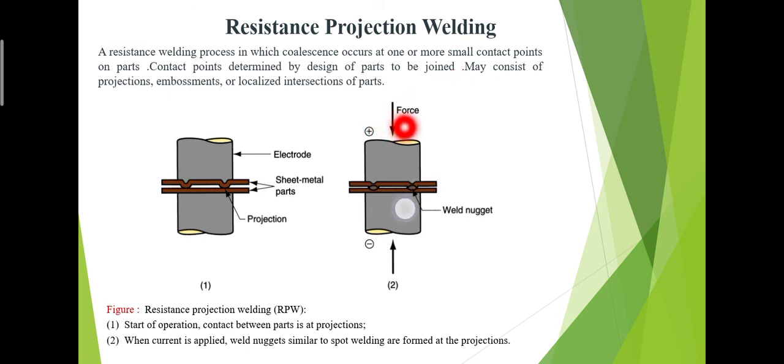We can say that low carbon steel can be welded easily and satisfactorily. Coated metals such as galvanized steel and tin plates can be welded, though considerable electrode maintenance is usually needed because coating sticks to the face of the electrodes. Nickel, copper alloy, stainless steel, and titanium alloys are all satisfactorily welded by projection welding process.